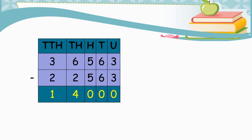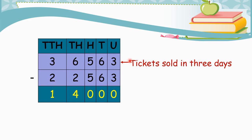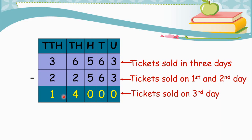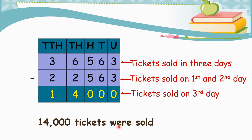We have 36,563 as the total number of tickets sold in 3 days and 22,563 as the number of tickets sold on the first and second day. Let us subtract the tickets sold on the first and second day from the total tickets sold in 3 days to get the answer. We get 14,000 tickets sold on the third day of the cricket match.